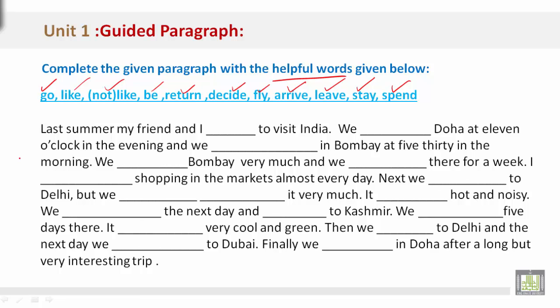I'll read it for you. Last summer, my friend and I went to visit India. 'Went' is in the past because 'last summer' is in the past, so you also need a verb that is in the past. We flew to Doha at 11 o'clock in the evening and we arrived in Bombay at 5:30 in the morning. We liked Bombay very much and we stayed there for a week. I went shopping in the markets almost every day.